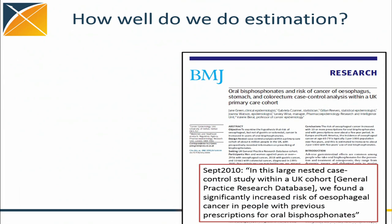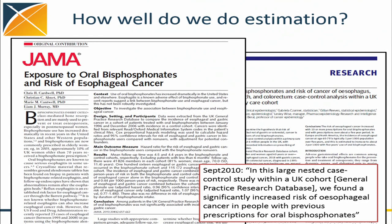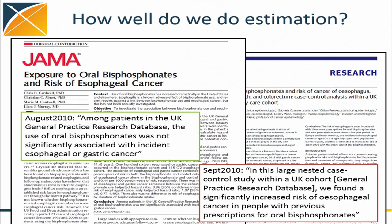They concluded: we found a significantly increased risk of esophageal cancer in people with previous prescriptions for oral bisphosphonates. Around about the same time, a paper appeared in JAMA — a different group of analysts, the exact same issue. They concluded: among patients in the United Kingdom GPRD, the use of oral bisphosphonates was not significantly associated with esophageal or gastric cancer. Two papers, top journals, the exact same issue, same database, arriving at opposite conclusions. This is a little bit disturbing.